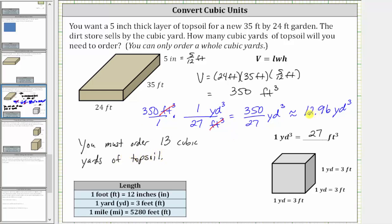So remember, even if this was, let's say, 12.1 cubic yards, you would still have to order 13 cubic yards, because you could only order a whole number of cubic yards, and if you ordered 12, you wouldn't have enough. I hope you found this helpful.